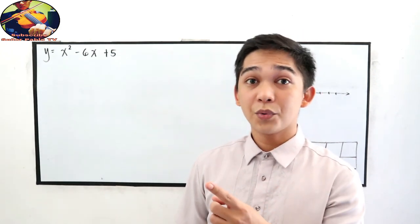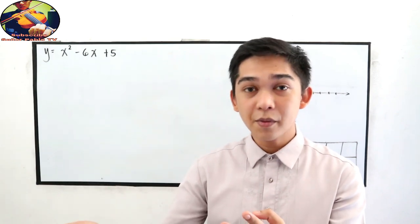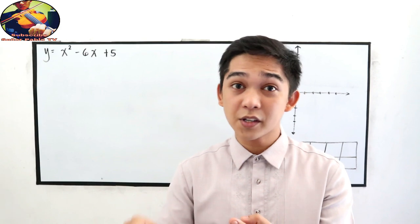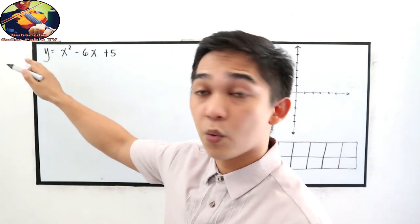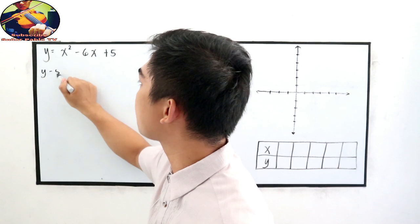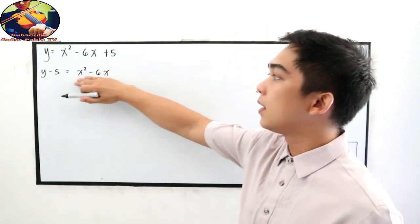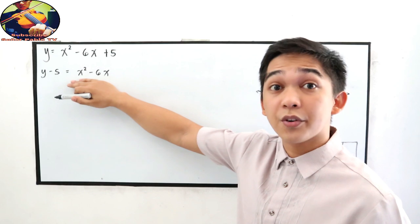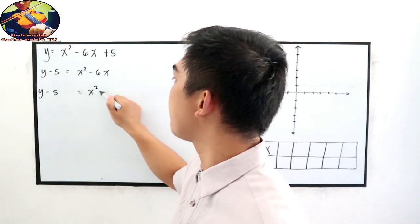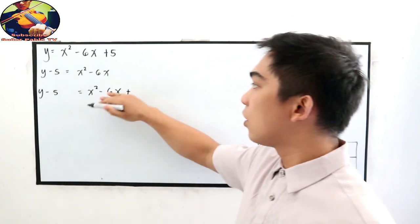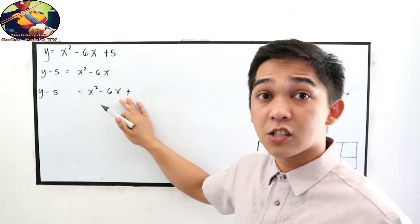The first step, we need to find the vertex. We have two possible ways: rewrite into vertex form, or use the formula. Let us first rewrite into vertex form. Transpose 5 to the left side of the equation, so that is y minus 5 is equal to x squared minus 6x. On the right side, make it into a perfect square trinomial — so y minus 5 equals x squared minus 6x plus what constant term will make it a perfect square trinomial?